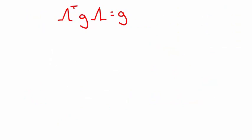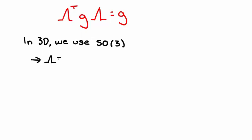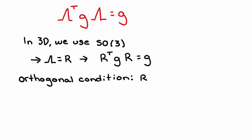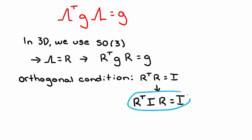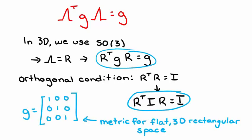So let's start by looking at flat three-dimensional rectangular space. In a previous video, we said that the allowed rotations, or the isometries, in 3D are described by the group SO3. So in 3D, the lambdas here are the rotations r that we've worked with before. Our metric transformation equation then becomes r transpose g r equals g. We can compare this to the orthogonal condition, r transpose r equals I. By inserting an identity matrix between r transpose and r, we can recognize that the metric for this space is the 3x3 identity matrix. Note that if we didn't know anything about 3D transformations, but instead were given the metric for this space, you would still be able to use the transformation rule for the metric to derive the requirements for SO3.